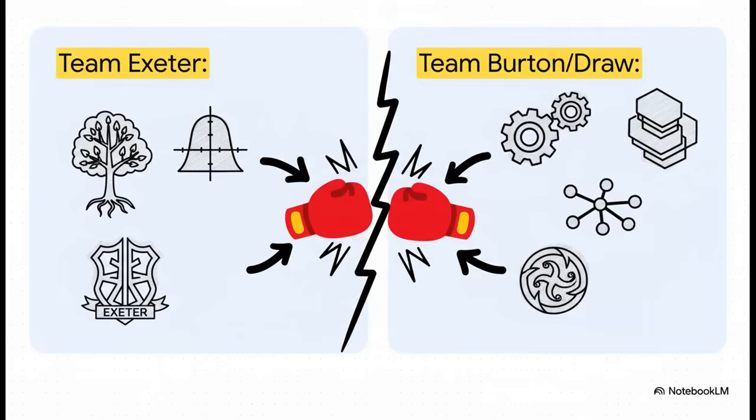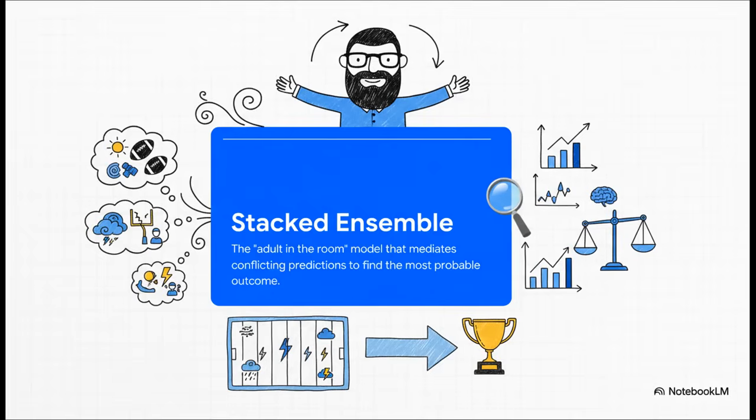And just look at this. The different models are fighting like siblings in the back of a car. You've got some, like the random forest model, over in Team Exeter's corner. Then you have others, like XGBoost and the MLP, screaming for Burton or maybe a draw. When the AI experts all disagree this much, it's a flashing red light for deep, deep uncertainty in the data.